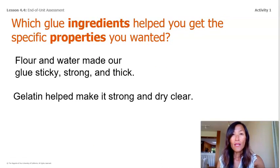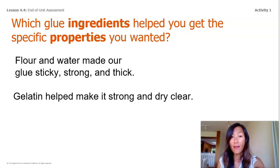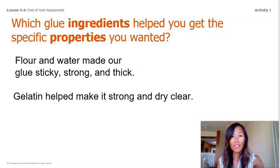Which glue ingredients helped you get the specific properties you wanted? The flour and water made our glue sticky, strong, and thick. And gelatin helped make it strong and dry clear. The observations we made will help us complete our letters to the principal in the next activity.